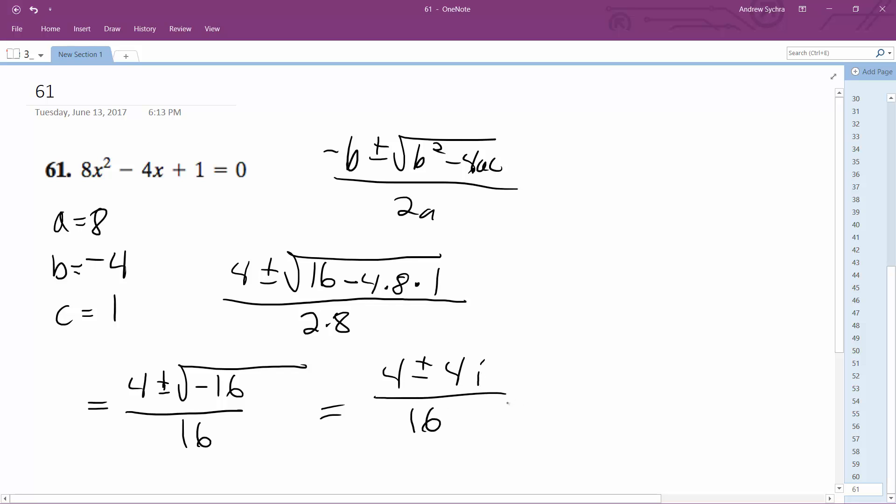And what we end up with, simplified down, is 1 plus or minus i over 4, or 1/4 plus or minus i/4. That's it.